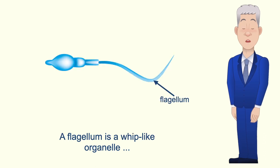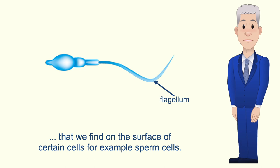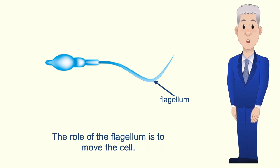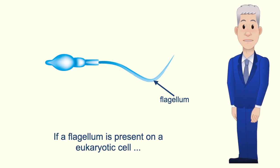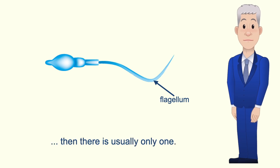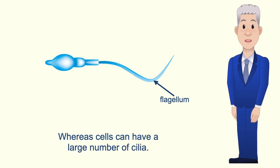A flagellum is a whip-like organelle that we find on the surface of certain cells, for example sperm cells, and the role of the flagellum is to move the cell. Flagella are longer than cilia, and if a flagellum is present on a eukaryotic cell then there's usually only one, whereas cells can have a large number of cilia.